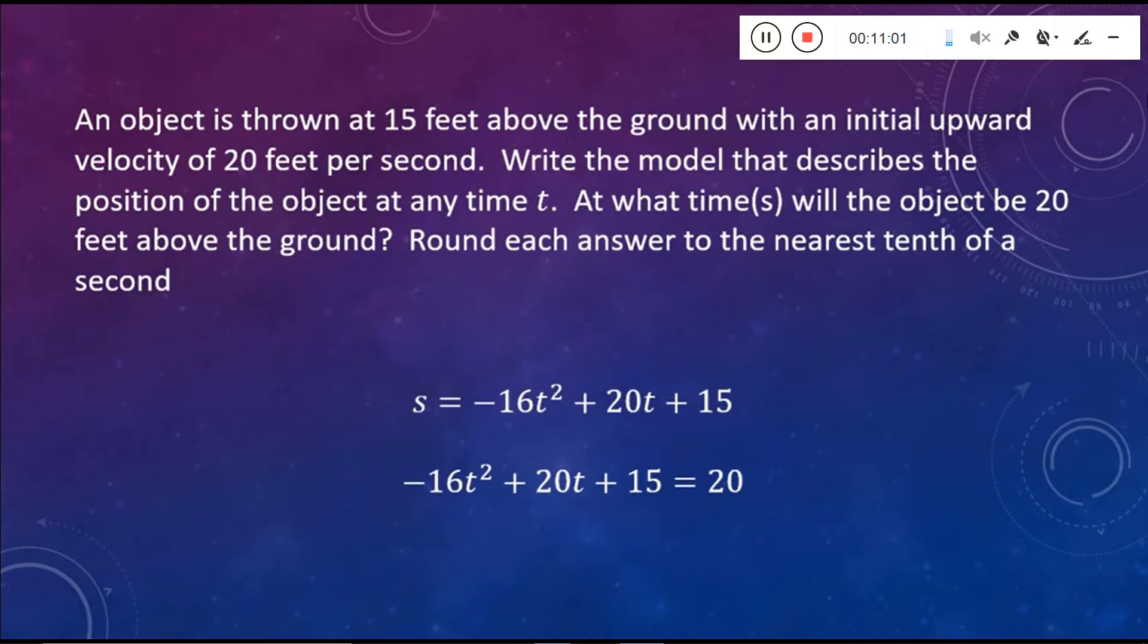Well, first let's get this thing, let's get a quadratic looking thing equal to zero. So to do that, let's subtract 20 from both sides. And if we do that, we are going to come up with negative 16t squared plus 20t minus 5. And that's going to equal zero. Because we just subtracted 20 from both sides.